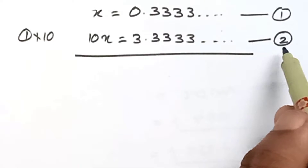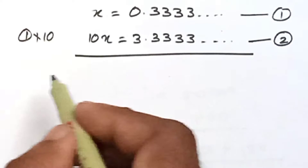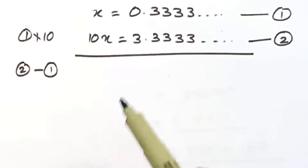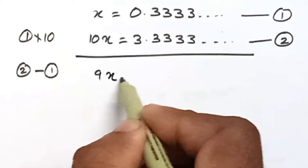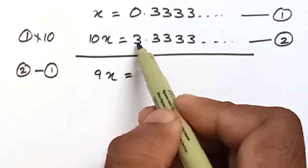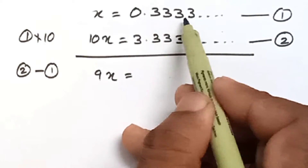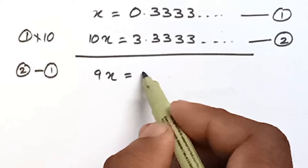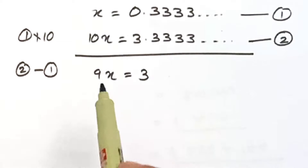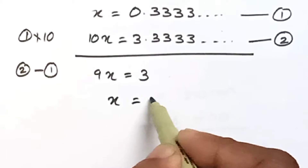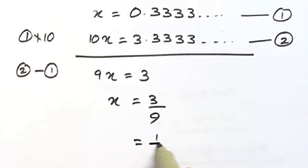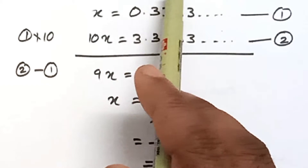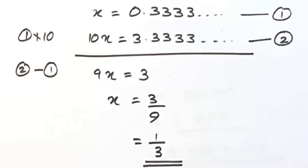When we subtract equation number one from two — that is equation two minus one — 10x minus x is 9x. And 3.333... minus 0.333... — the decimal parts are the same, so they get cancelled. 3 minus 0 is 3. That means 9x is equal to 3, so x is equal to 3 by 9, which equals 1 by 3. That means we can express 0.333... as 1 by 3 in rational form.